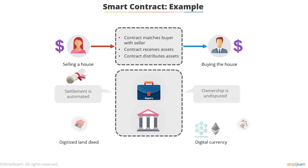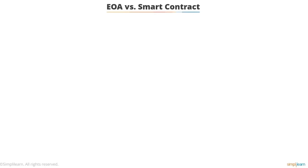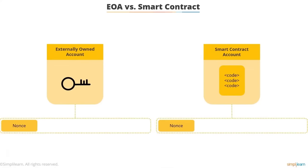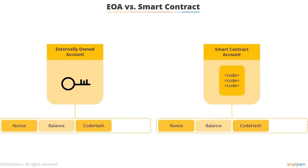The settlement is automated and ownership becomes undisputed due to the transparency of blockchain. EOA vs Smart Contract: based on four critical properties — nonce (in an EOA, nonce is the number of transactions sent from the account's address; in a contract account, it's the number of contracts created by the account), balance (the amount of Wei owned by the address — each Ether is divided into 1e+18 Wei), code hash (the hash of the EVM code of an account — for EOAs it is the hash of an empty string; for contract accounts it's the code that gets hashed), and storage root (a 256-bit hash of the root node of a Merkle tree encoding the storage contents of the account).